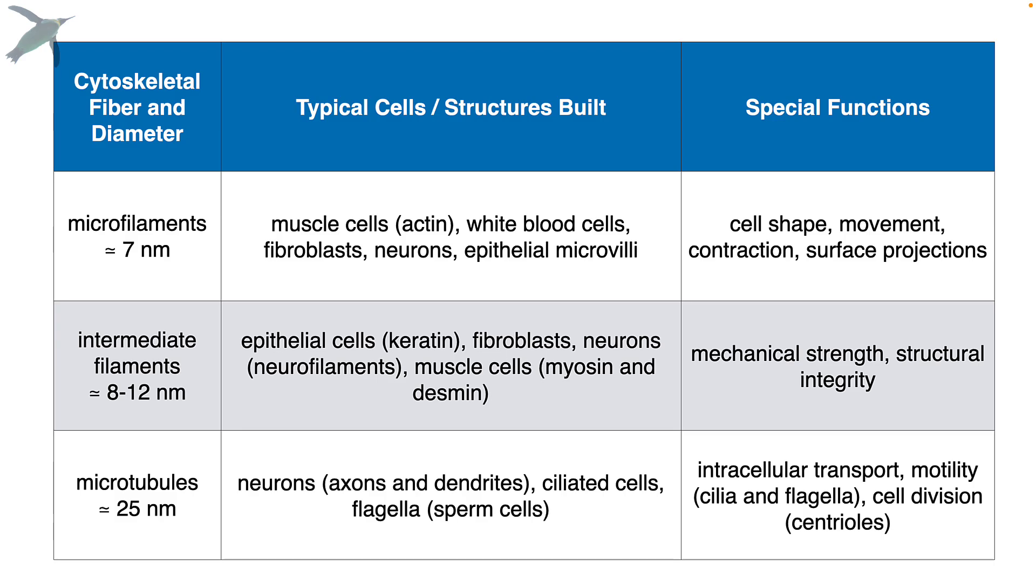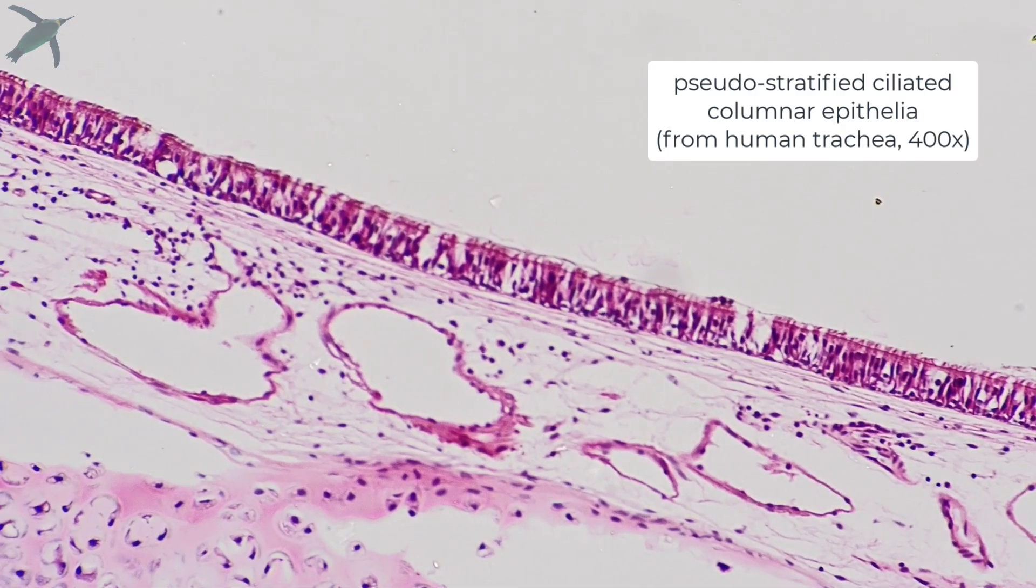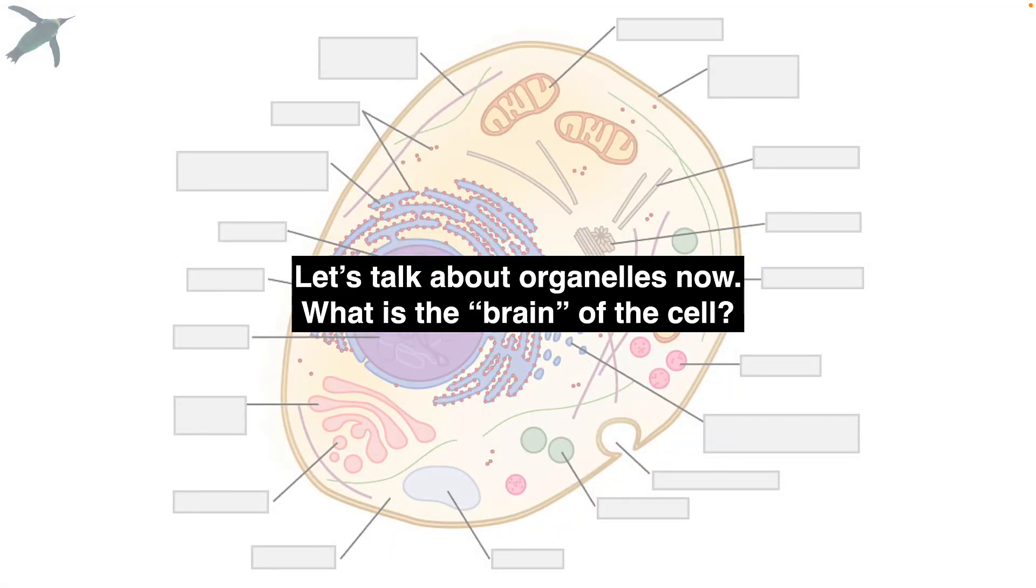And microtubules, as I was mentioning before, these are big ones, and they're important for intracellular transport, and my personal favorite, cilia and flagella. The only human flagellated cells are sperm, and they are so cute. The tails of the sperm are made of microtubules. Okay, let's talk about the organelles now.